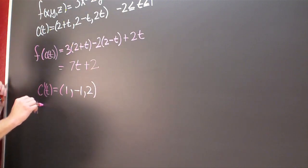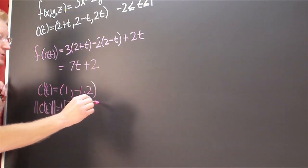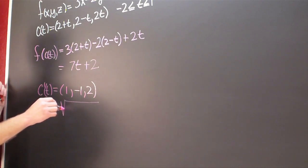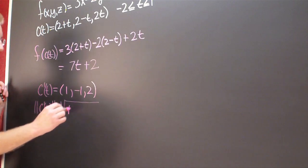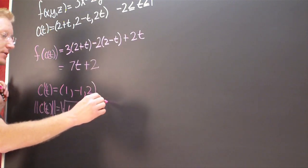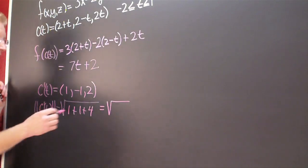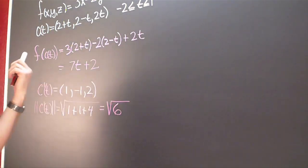Now what I need to do is I need to find the magnitude of C' of T. In doing so, I'm looking at that square root of the squares of the components of the derivative. So this is 1 plus 1 plus 4, which is going to be the square root of 6.